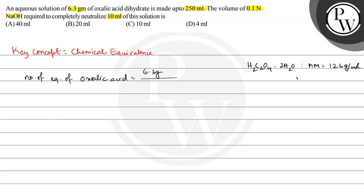The equivalent mass is equal to molar mass divided by N factor, that is 126 divided by 2, which is equal to 63 grams per equivalent. So the number of equivalents of oxalic acid is 6.3 divided by 63, which equals 0.1.